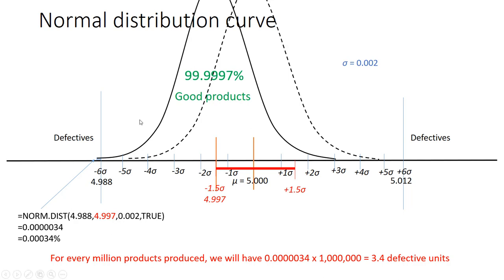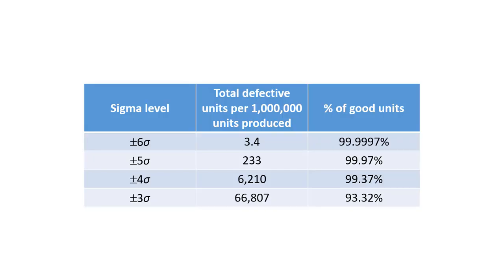In other words, for every one million products produced, we manufacture only 3.4 defective units. Note that with a standard deviation of 0.002, the specification limits are plus or minus six standard deviations apart. Therefore, we call this a six sigma process.